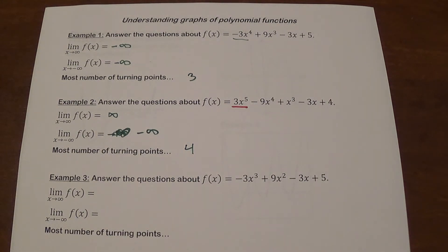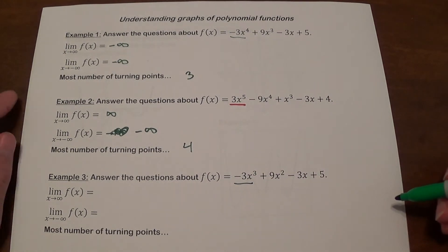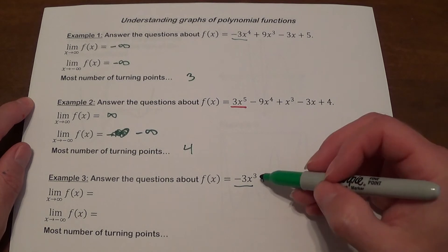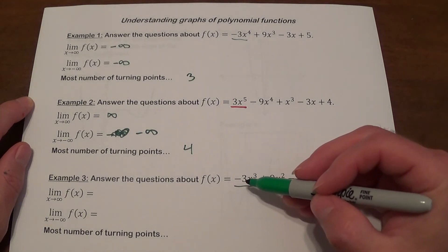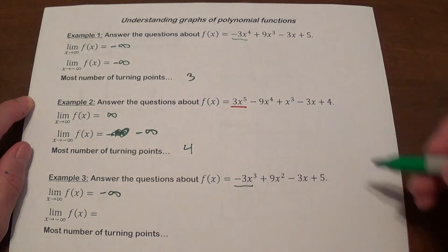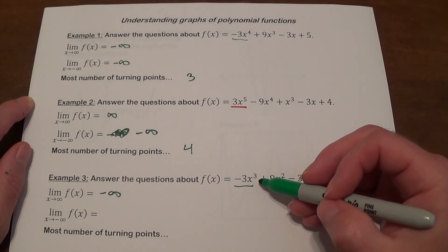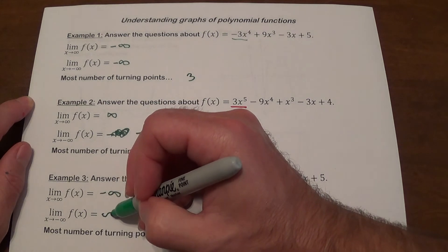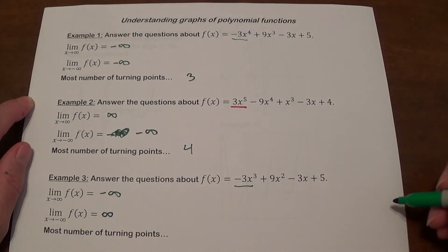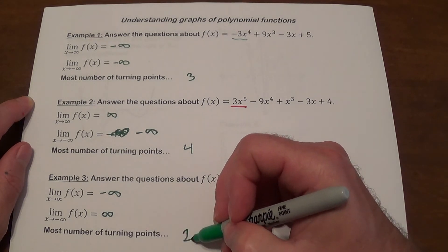The last example on this page: a function of degree 3, with negative 3x cubed as the leading term — that's the only term we need to answer all three questions. We have an odd degree with a negative leading coefficient. The negative leading coefficient means on the right the function goes to negative infinity. Because the degree is odd, on the left side it does the opposite and goes to infinity. The degree is 3, so the maximum number of turning points is 1 less, which means 2.